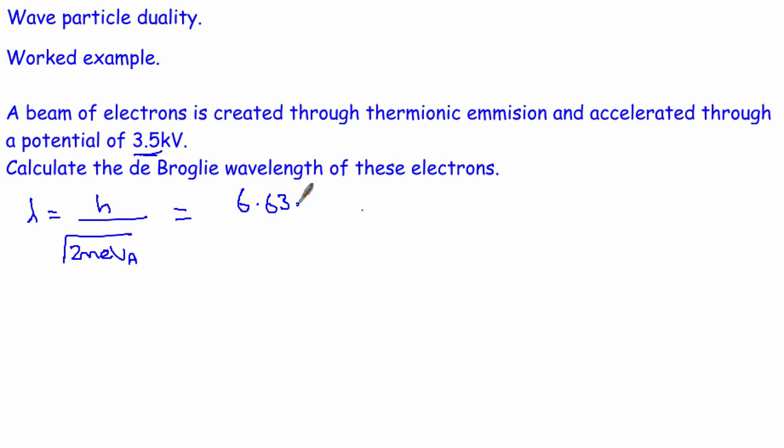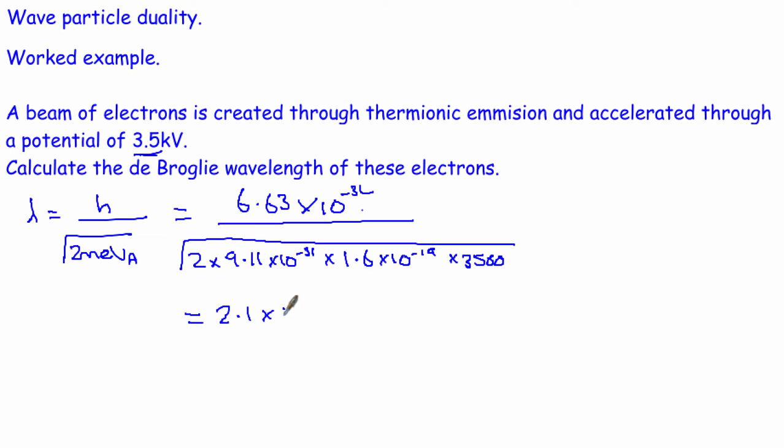So Planck's constant is 6.63 times 10 to the minus 34 over the square root of, we'll need a big square root, 2 times mass of electron is 9.11 times 10 to the minus 31 kilograms, multiplied by the charge of the electron, 1.6 times 10 to the minus 19, multiplied by the potential difference, so 3,500. And if we simply just do that on our calculator, to two significant figures, because this is to two significant figures, I end up with 2.1 times 10 to the minus 11 meters, like that. So the wavelength of these particular electrons is slightly smaller than the diameter of an atom.